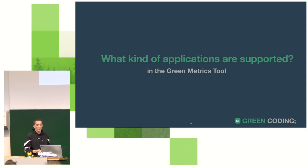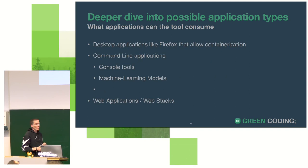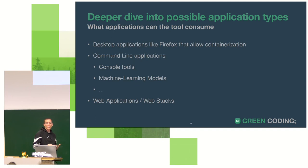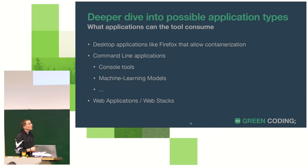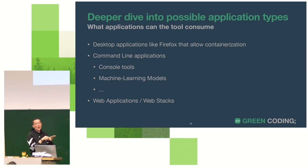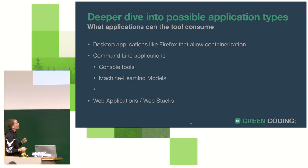What kinds of applications does the tool support? Desktop applications like Firefox can be containerized, given a URL, given plugins, and you get an energy budget. Command-line applications are directly supported — this means machine learning models too, since Python ML is typically a command-line call. Web applications were where the idea originated; you specify the server, image, and connections. If you already have Docker Compose files, the tool can consume them directly.